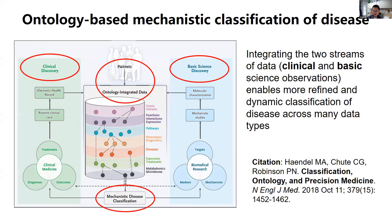I want to start with a good paper recently published in the New England Journal of Medicine, which emphasized the role of ontology — how ontology can help to integrate clinical data and omics and imaging data together, and eventually we can study the mechanistic disease, classification, and mechanism.